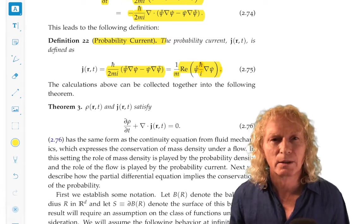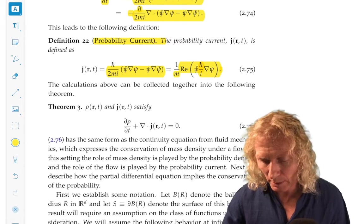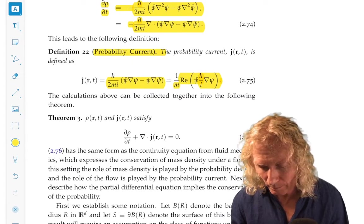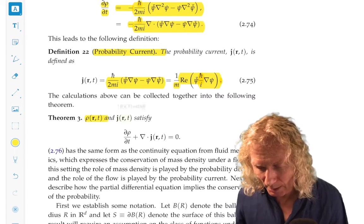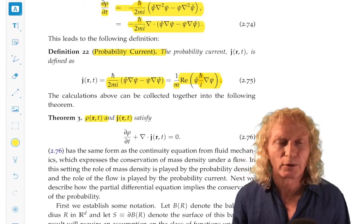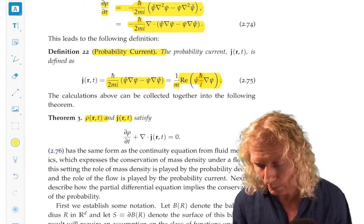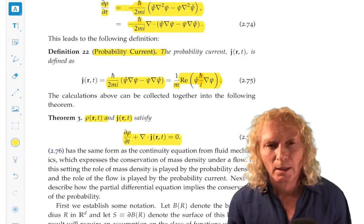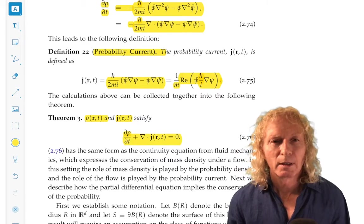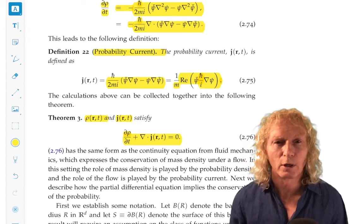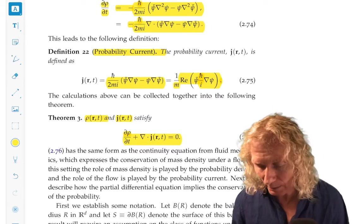Anyway, if we collect the terms that we derived above, we can show that the probability density and the probability current satisfy the following equation. And I've split this off as a theorem. We just proved it, essentially, just because it's important. Now, this equation, if we weren't in quantum mechanics and you had had the fluid mechanics course, you would say, ah, that's the continuity equation for conservation of mass.